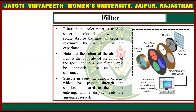A filter in the colorimeter is used to select the color of light which the solute absorbs the most, in order to maximize the accuracy of the experiment. Note that the color of the absorbed light is the opposite of the color of the specimen — so a blue filter would be appropriate for an orange substance.